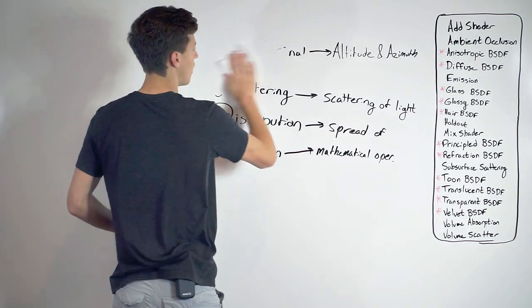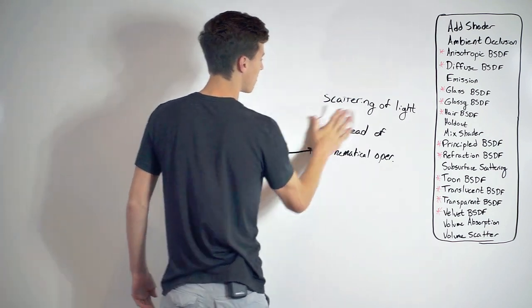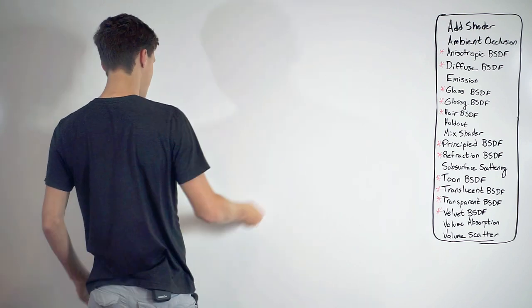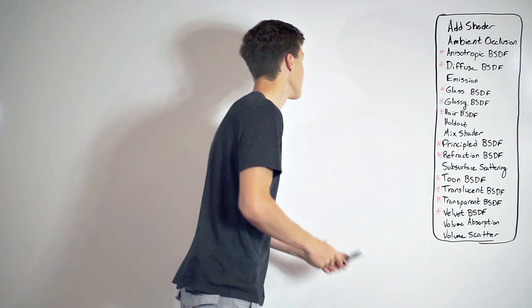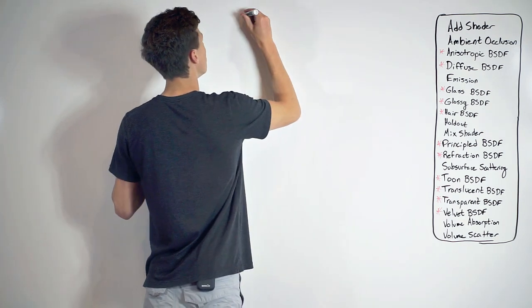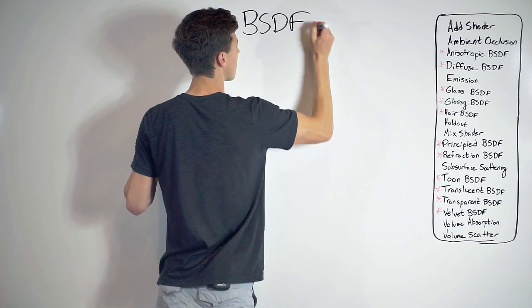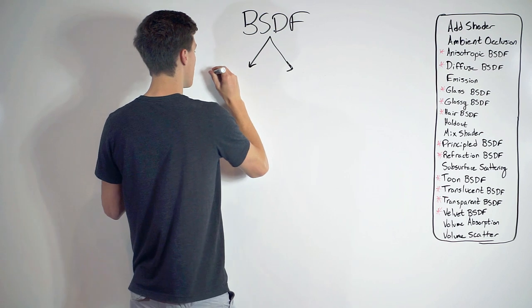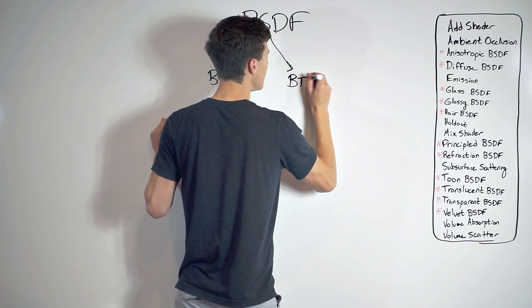But wait, you thought that was all you had to know? That it was just one weird anagram? Well, you're wrong because BSDF is actually a generalized statement. A BSDF is kind of like the top of a tree of different things. So we have BSDF chilling up here at the top. But there's actually two different subsets of BSDF, those being BRDF and BTDF.